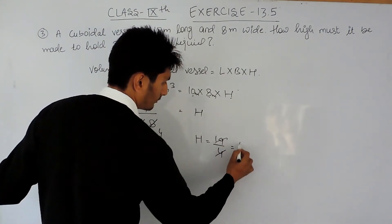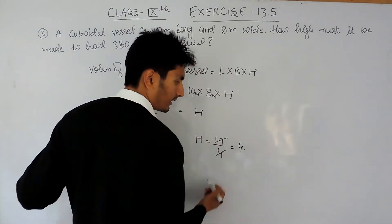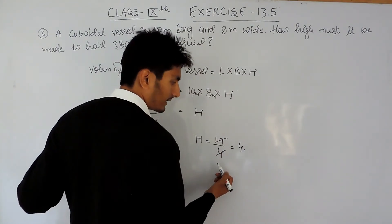4 goes into 19... 4 times 4 is 16, carry 3. 3 can't be divided by 4, so placing a decimal here and it becomes 30.